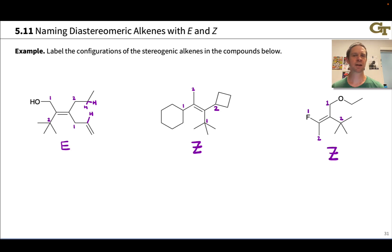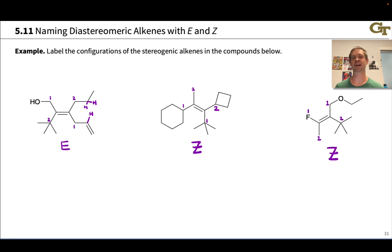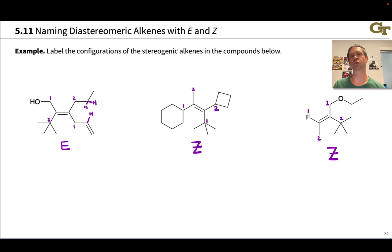The E-Z nomenclature convention gives us a way to name the configuration of a stereogenic alkene in a perfectly general way that doesn't depend on a 1,2-disubstitution pattern like we typically need for cis and trans naming.